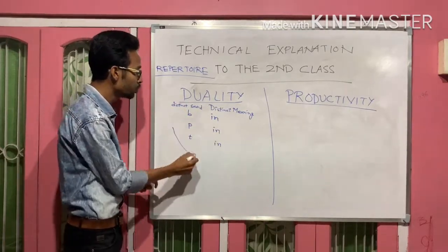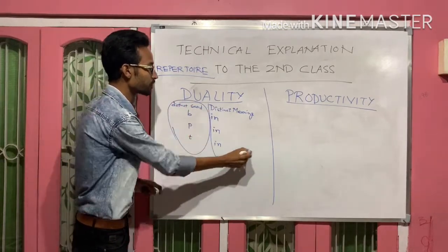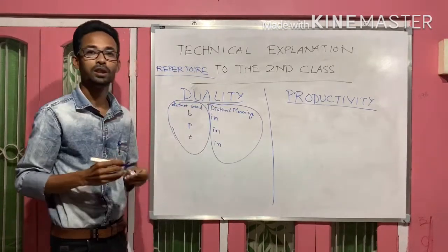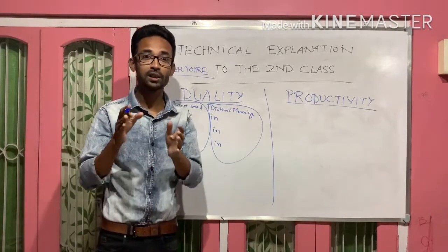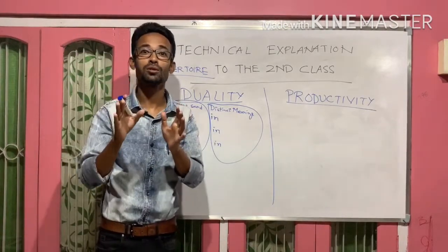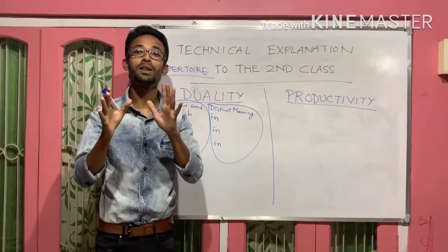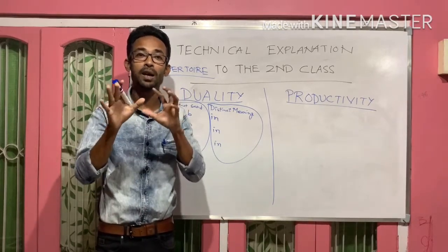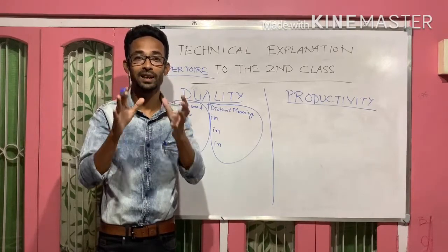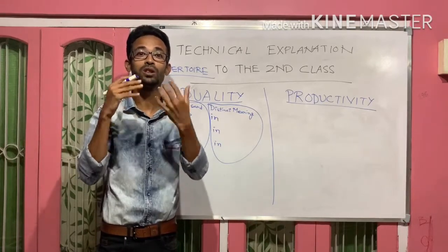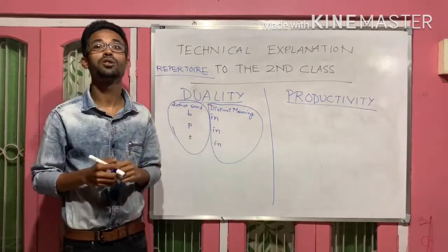Duality involves the use of two different elements — distinct sounds and distinct meanings — so that the usage of language becomes economical. This economical use of language is what the duality feature allows. It makes language usage efficient.